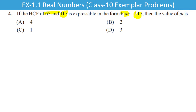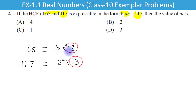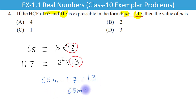Isko solve karne ke liye prime factorization method use karon ga. 65 ko factor karen to 5 times 13. 117 ka prime factorization karo to 3 squared times 13. Clearly dekh rahe hain ki jo common hai wo hai 13, so in dono ka HCF ho jayega 13. Diya hua hai ki HCF ko 65m minus 117 ke form mein express kar sakte hain. 65m = 130, aur 65 se divide karne par m = 2. So 2 is the right answer, option B.